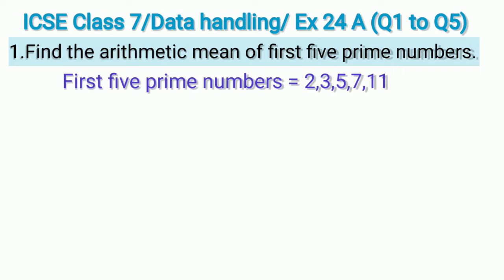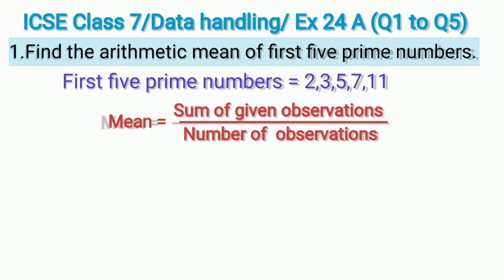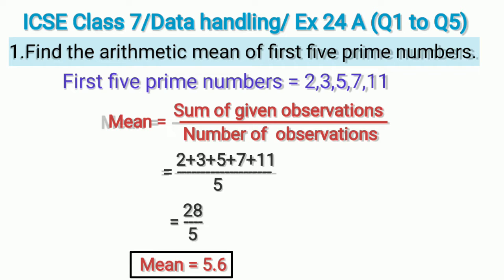We are asked to find the arithmetic mean of the first five prime numbers. The formula for mean is: mean equals sum of given observations divided by number of observations. Sum of observations is 2 plus 3 plus 5 plus 7 plus 11, divided by 5. Adding all these: 2 plus 3 is 5, plus 5 is 10, plus 7 is 17, plus 11 is 28. So 28 divided by 5 gives 5.6. The mean of the first five prime numbers is 5.6.